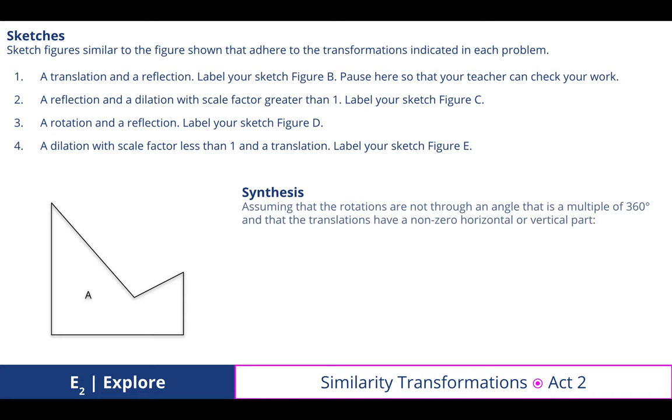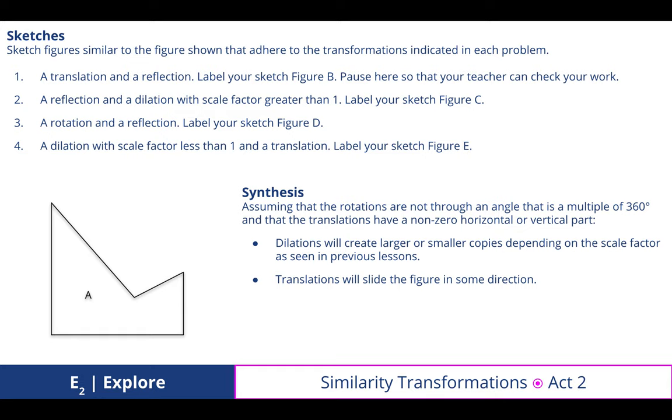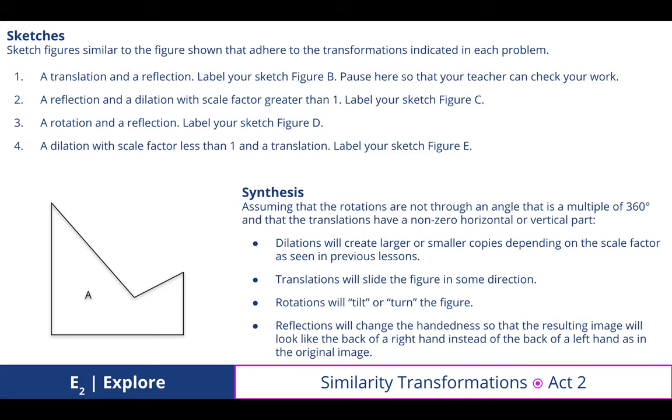To synthesize, assuming that the rotations are not through an angle that is a multiple of 360 degrees, and that the translations of a non-zero horizontal or vertical part, dilations will create larger or smaller copies, depending on the scale factor as seen in previous lessons. Translations will slide the figure in some direction, rotations will tilt or turn, and reflections will change the handedness, or the backwardness in a sense, of the image to a resulting image that looks to be mirrored, whether it's vertically or horizontally, or after a rotation of some sort at an angle.